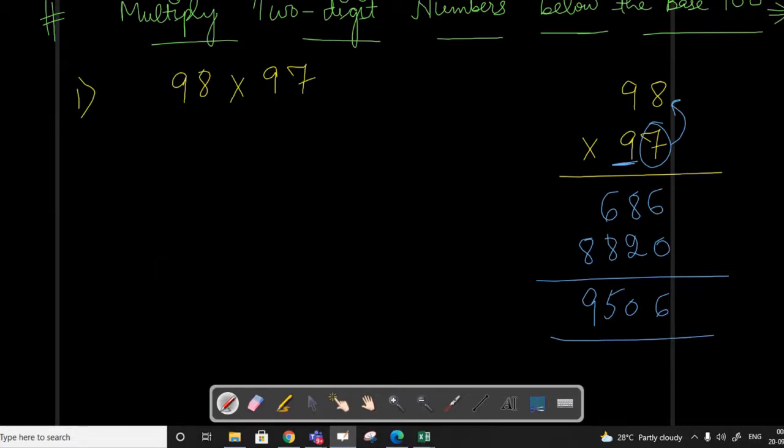Now the question is, can we solve it in just a few seconds? Absolutely yes. How? Let's see. As we know, these two numbers are just closer to 100, so we can take their base as 100. Both numbers have base 100.